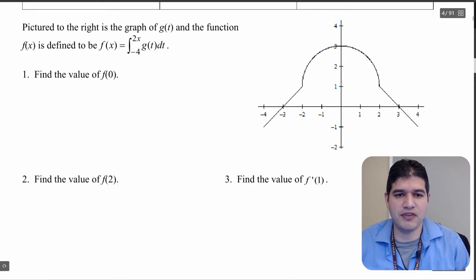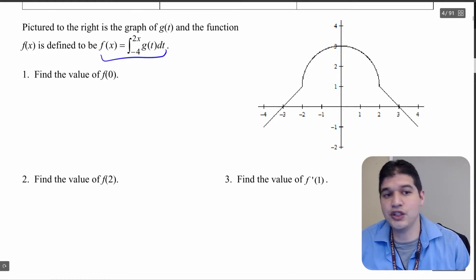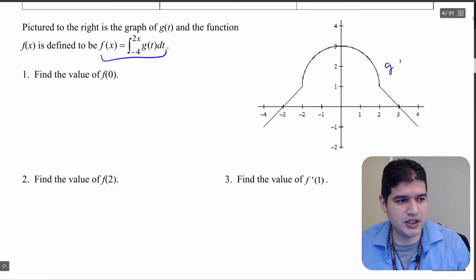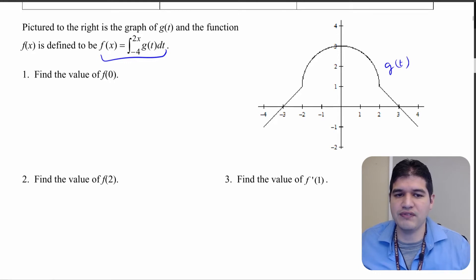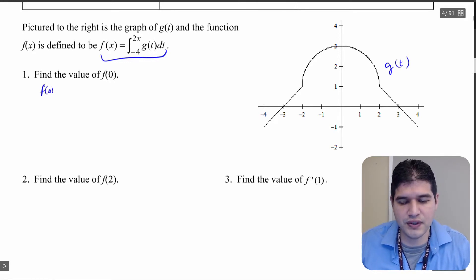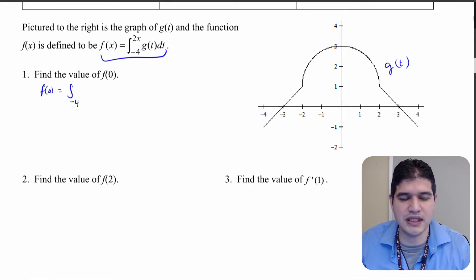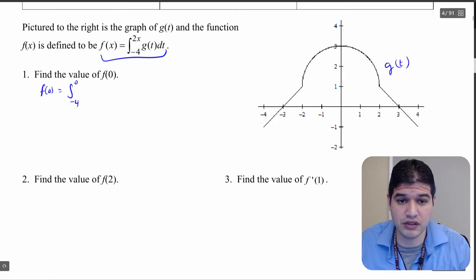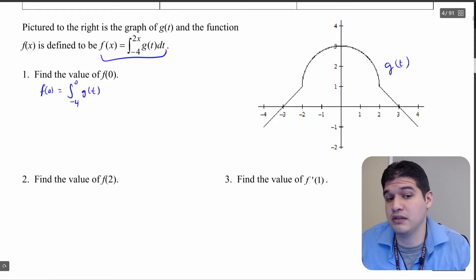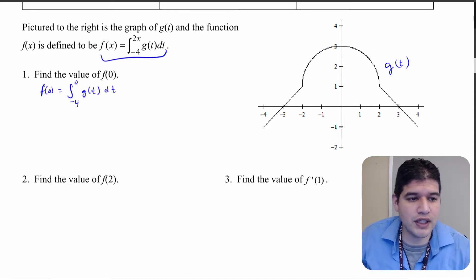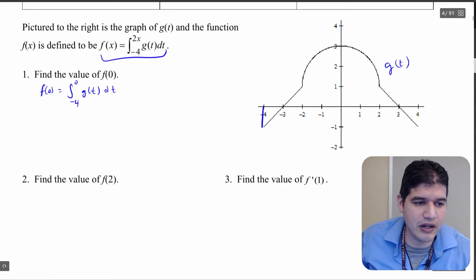In this problem we're given a function defined using a definite integral, and we're also given a graph that represents g of t. We want to find the value of f of 0. If I put in 0 for x, that gives me the integral from negative 4 to 0 of g of t dt, because t is not x so I don't substitute 0 for t. So I want to get the area from negative 4 to 0.